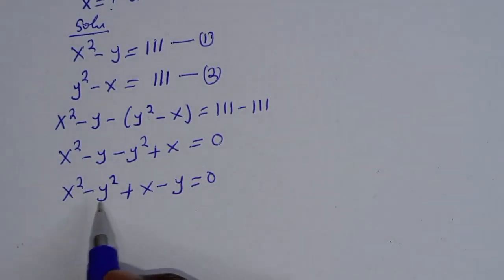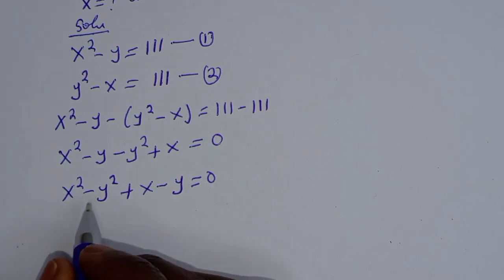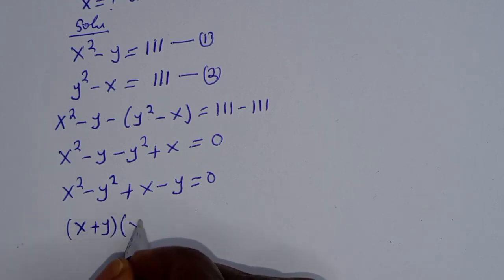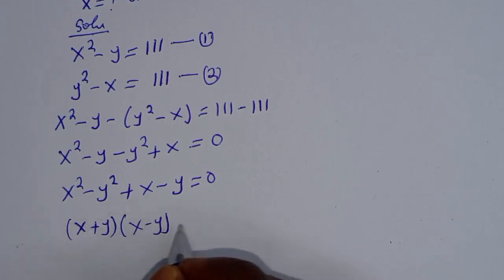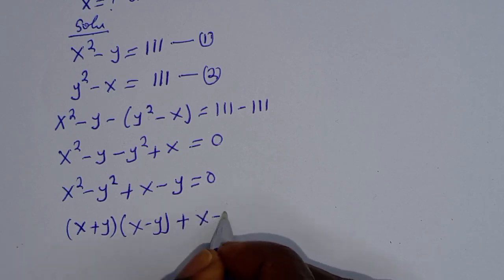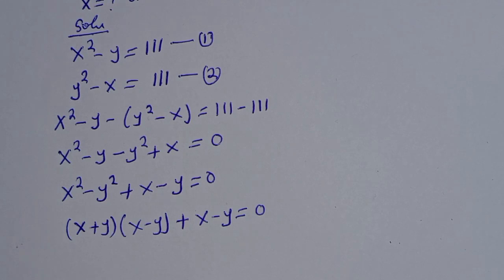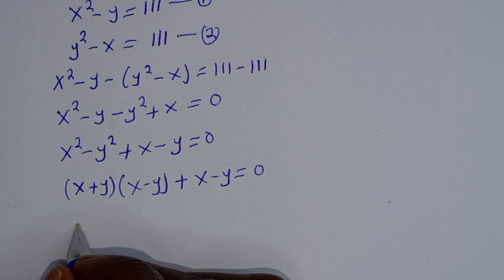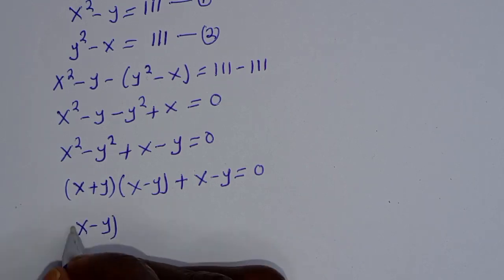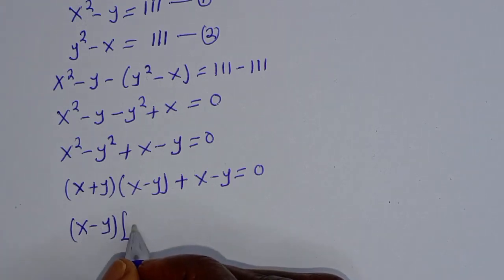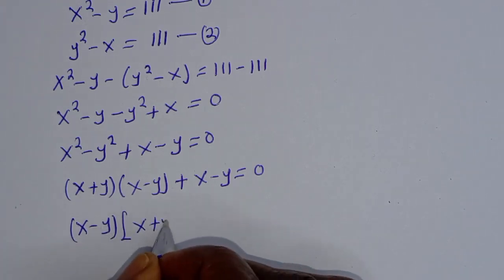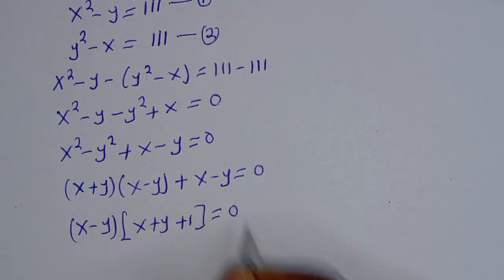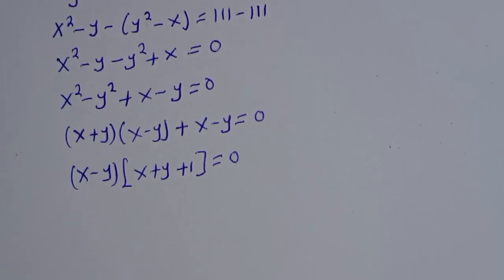x squared minus y squared is in the form of a difference of two squares, which can be written as (x plus y) multiplied by (x minus y), plus (x minus y) is equal to 0. Looking at this, x minus y is a common factor — let's bring it out: (x minus y) times (x plus y + 1) is equal to 0. There are two cases here.